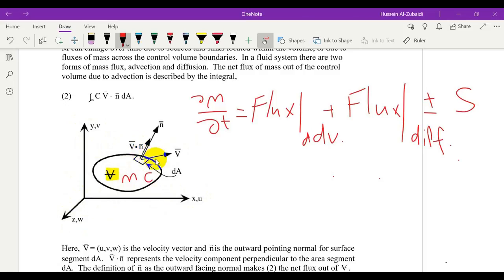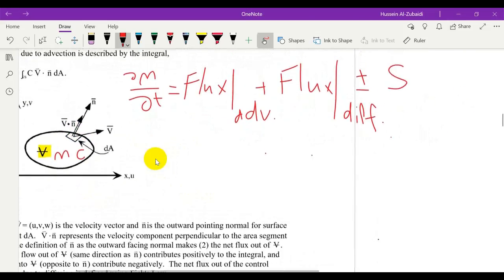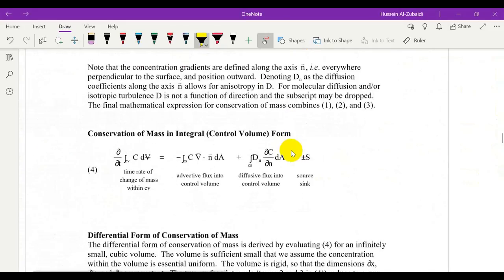Based on this setup we can derive the transport equation. We can write the mass in terms of concentration C times dV, and we integrate this over the control volume. This is the mass within the control volume: concentration times volume gives us this form.